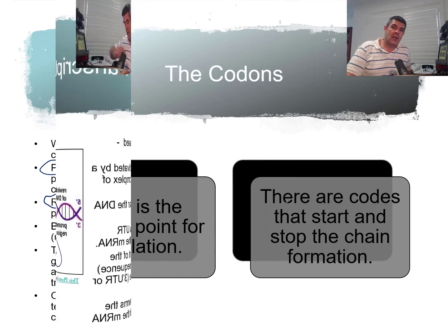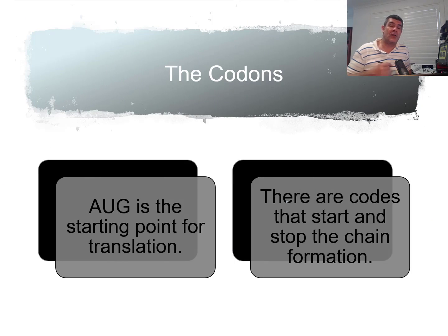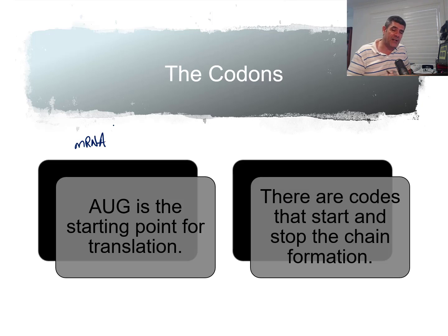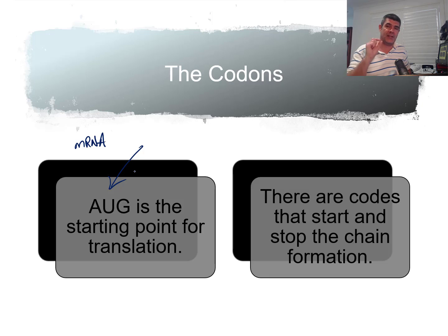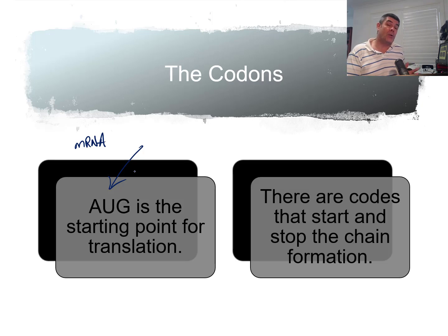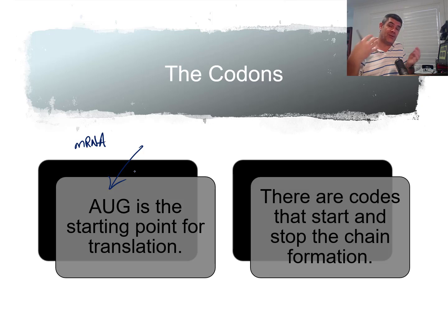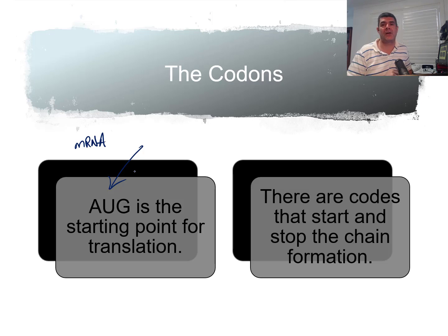Now let's look at some of the terminology. Codons are part of the messenger RNA — triplets of three bases coding for a particular amino acid. There's also a starting point: AUG is the start codon, which also codes for methionine and is common to all genes — everything after this is the code for amino acids that form the protein. There are also stop codes, so the process doesn't go on forever. A certain length corresponds to the gene, which translates into a specific number of amino acids to produce a particular protein. So we have start and stop codes as well as codons for specific amino acids.